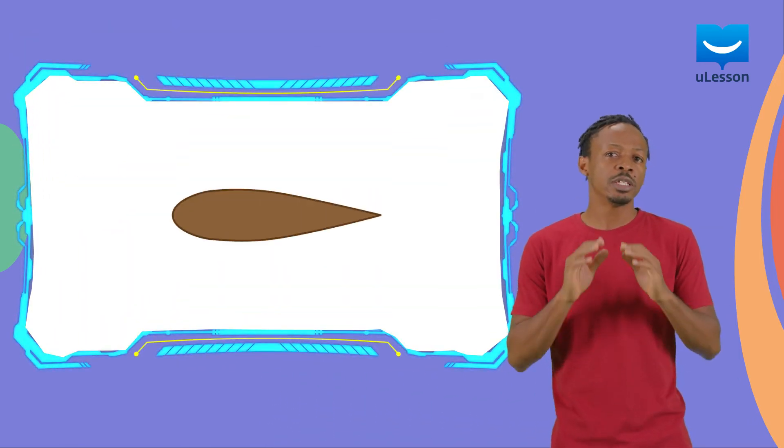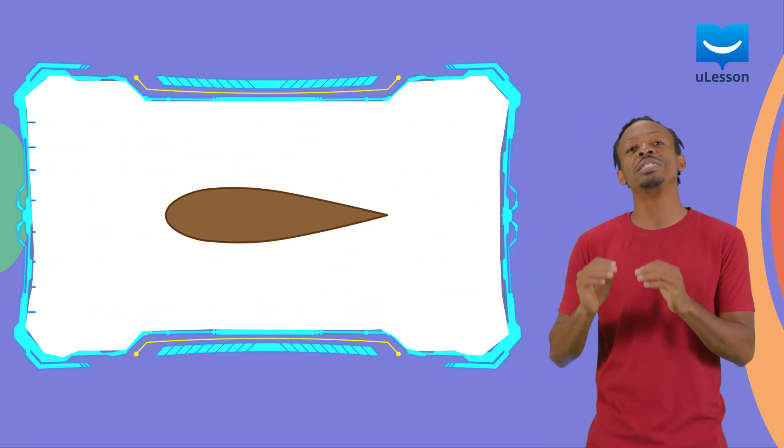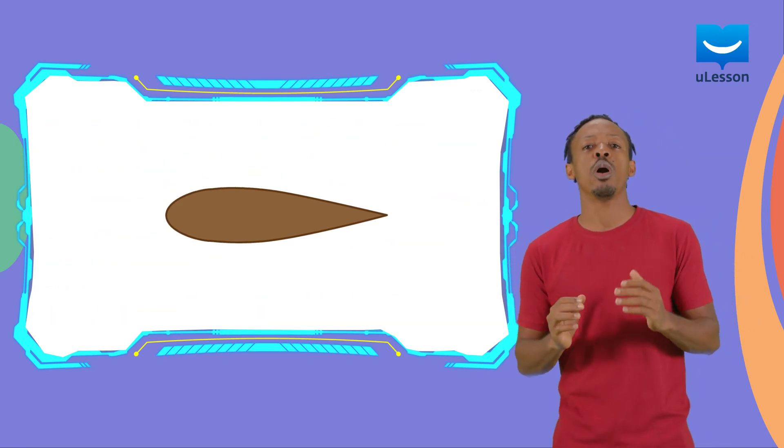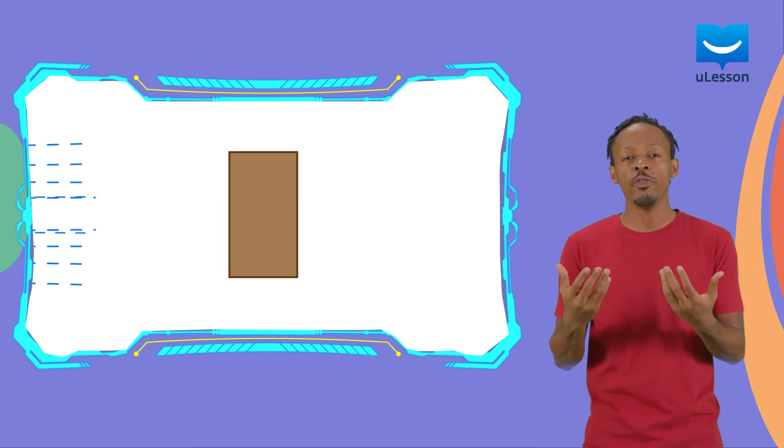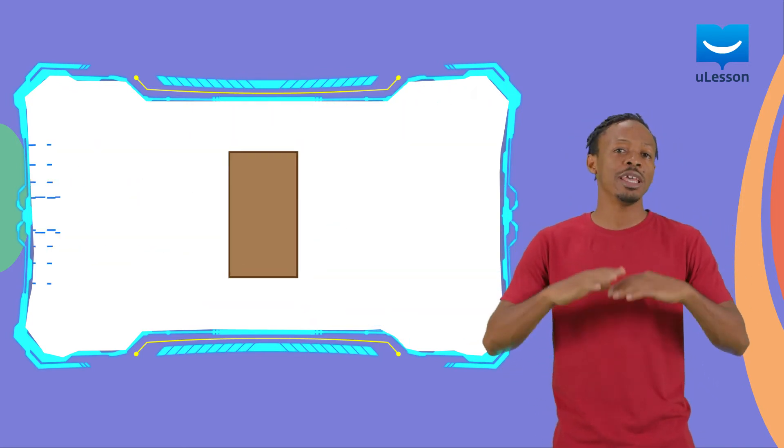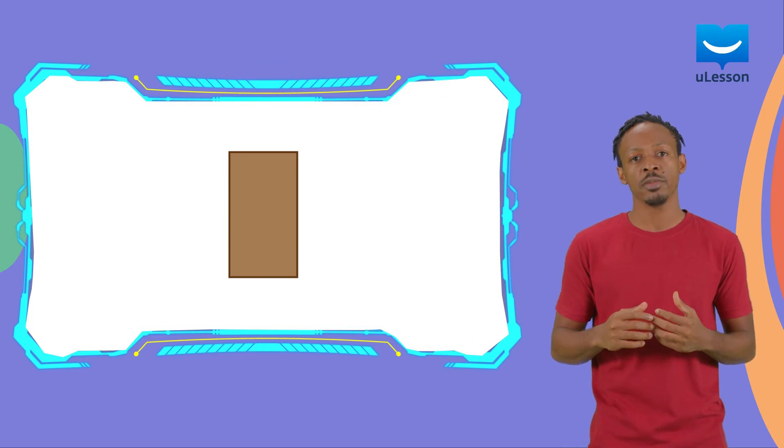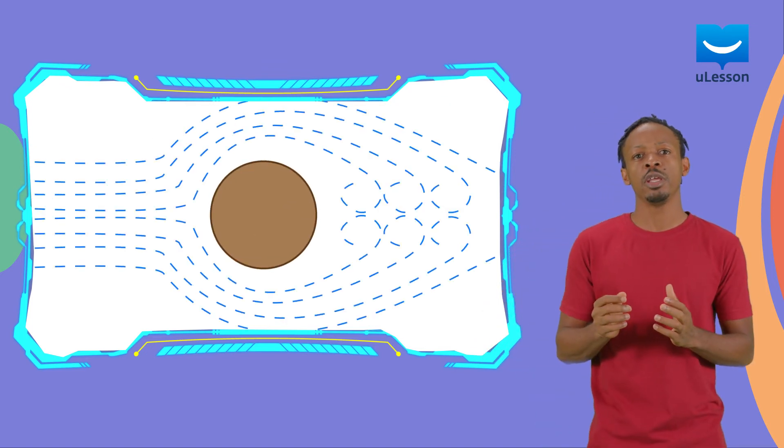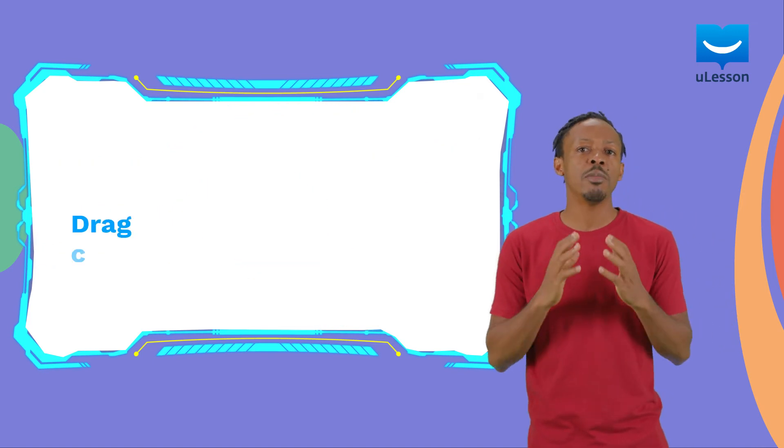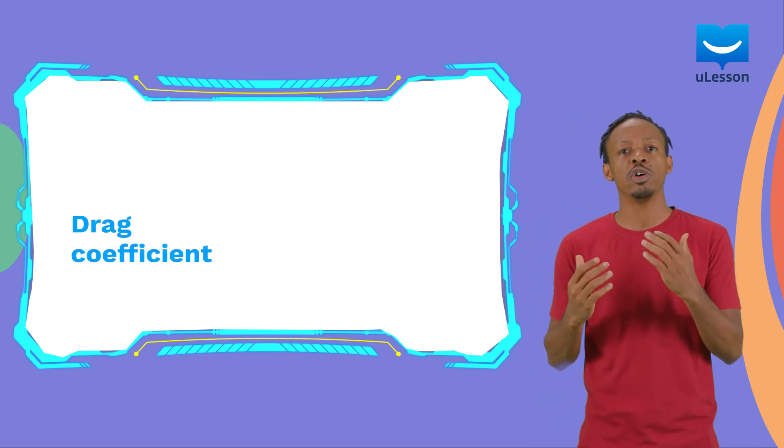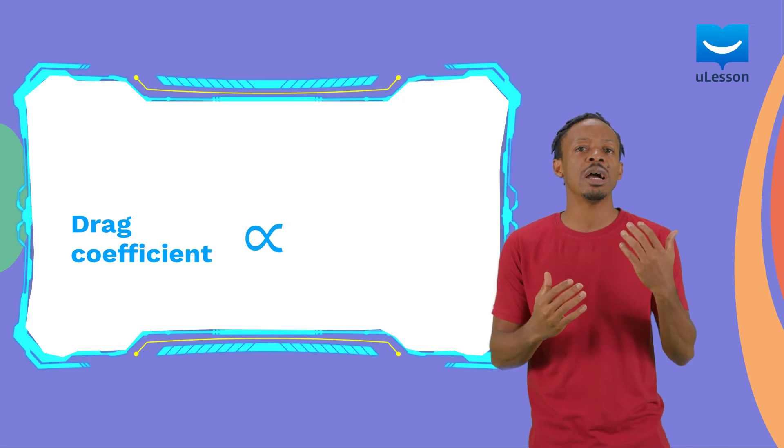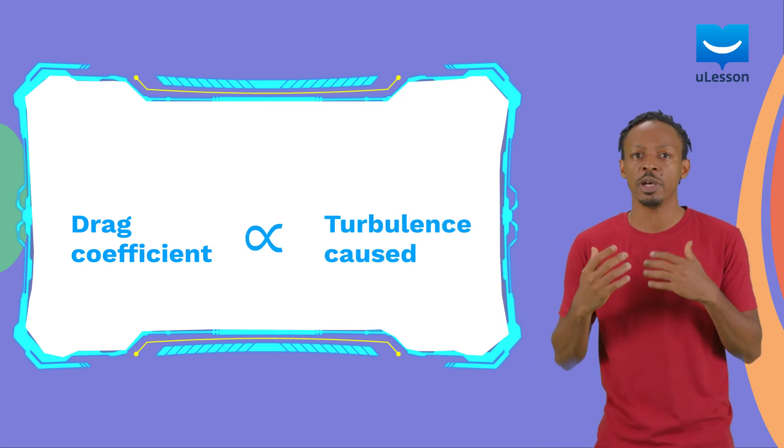This experiment can be repeated for several shapes and a few conclusions can be drawn. Slim objects with smooth edges cause the least turbulence while box shapes or rough uneven edges cause a lot of turbulence. Completely round objects are somewhere in the middle. It also becomes clear that the amount of drag that will be felt by the object is proportional to the amount of turbulence caused by the object.